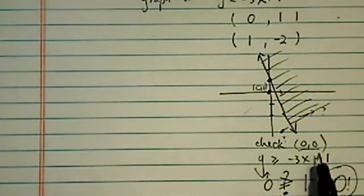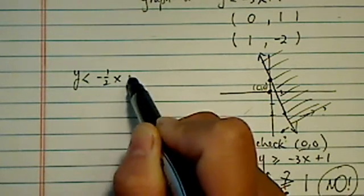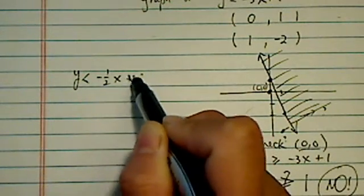Once again, I'm going to use (0,0) as my checking point. Now let's try the second one: y < -½x - 1.